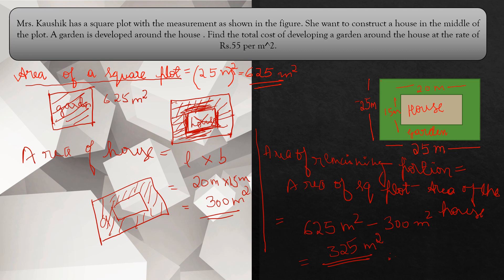Now we need to find the total cost of developing the garden around the house at the rate of Rs. 55 per meter square. For 1 meter square, it is Rs. 55.